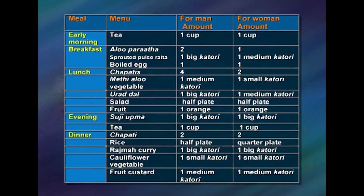For evening, if suji upma is made, both can be given one big katori with one tea cup. For dinner, two chapatis each with half plate of rice for man and quarter plate of rice for woman, rajma in one big katori for both, cauliflower and any other vegetable in one small katori each, one medium fruit each, and if custard is prepared, one medium katori for both.